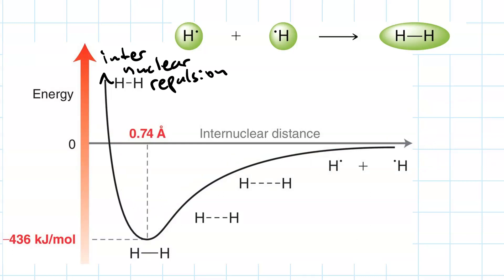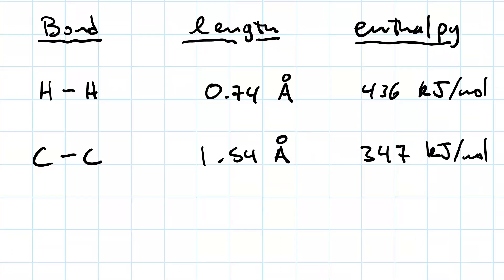Nonetheless, that 0.74 angstrom value, that is the average bond length for an HH bond. Now, not all covalent bonds are created equal. An HH bond is very short, because the two atomic orbitals that go into creating it are 1s orbitals with small atomic radii.